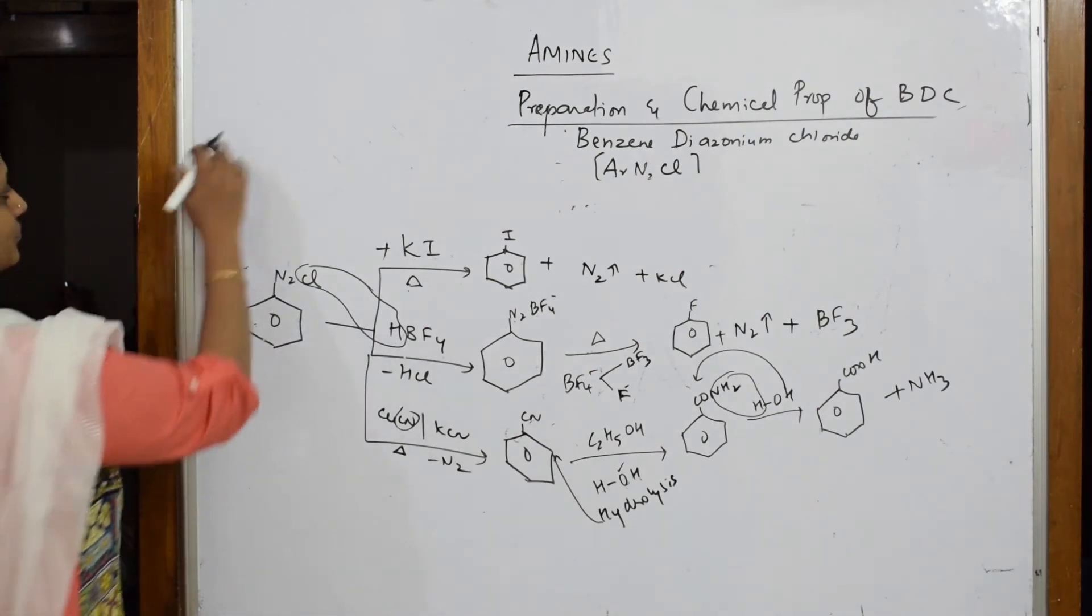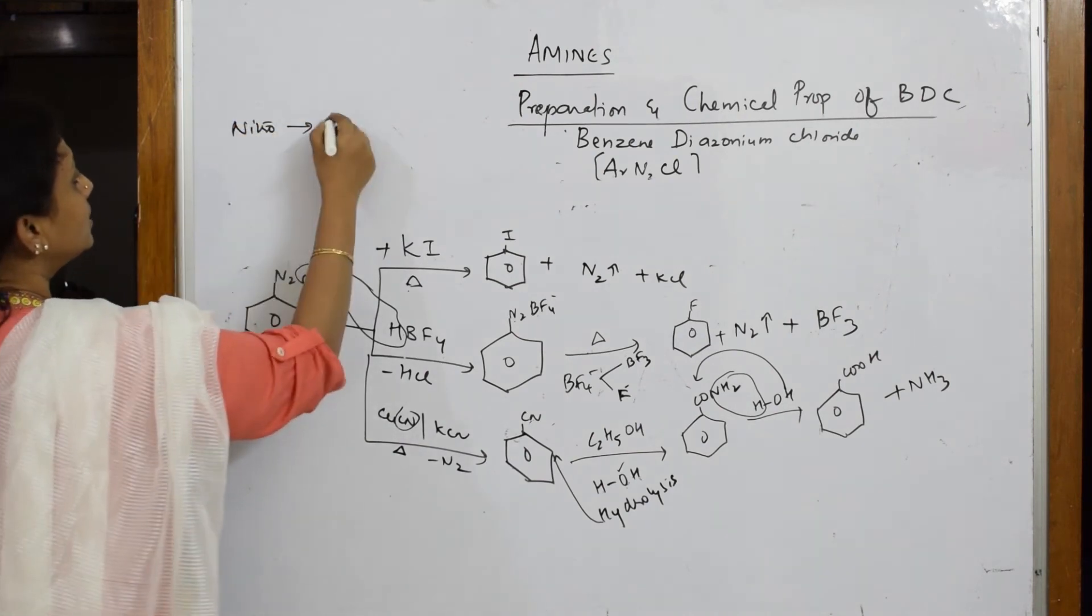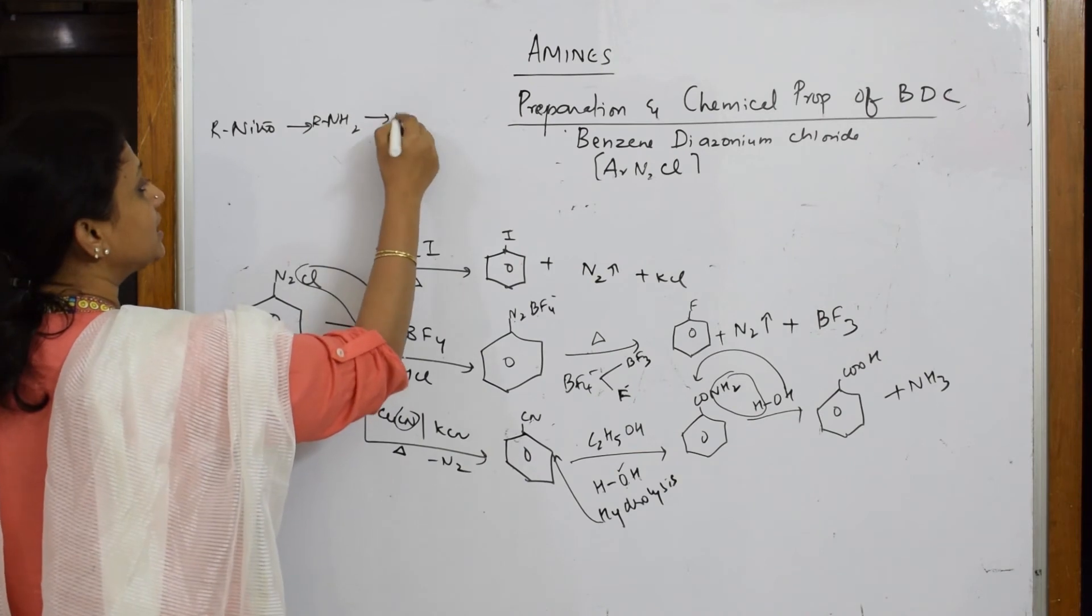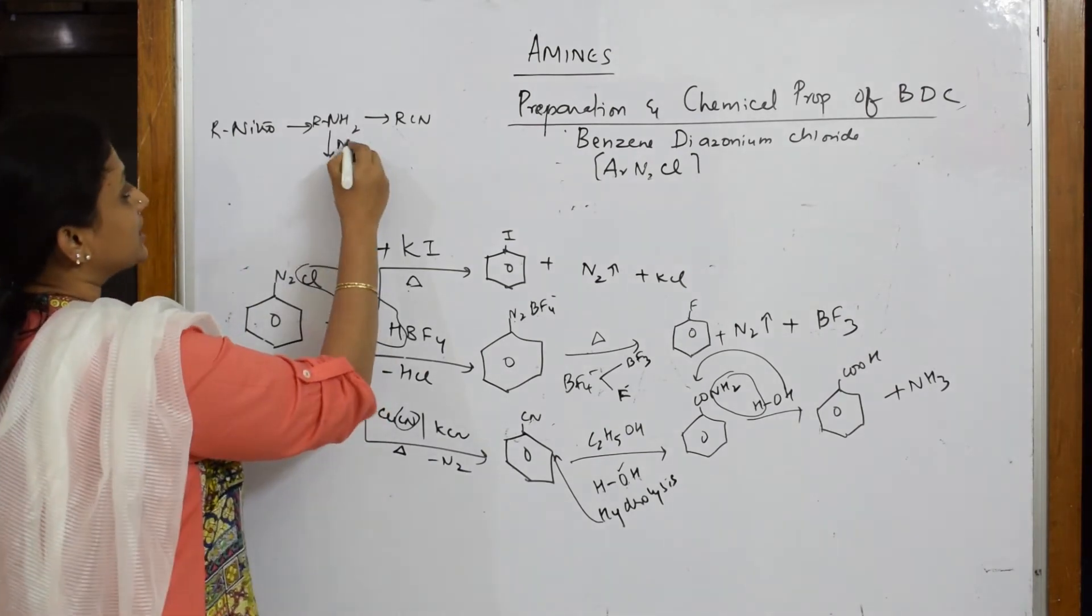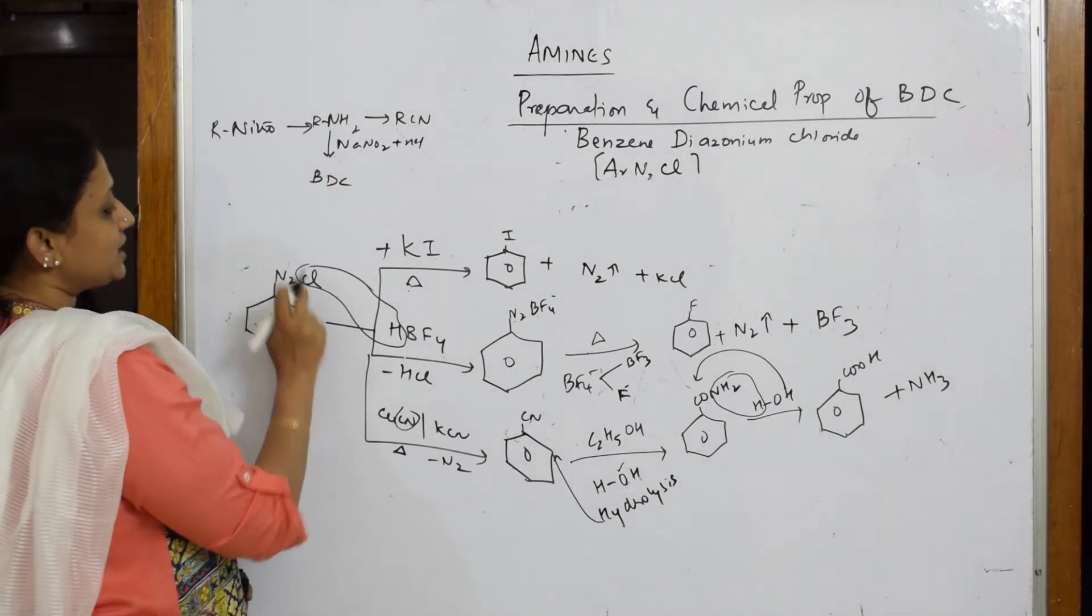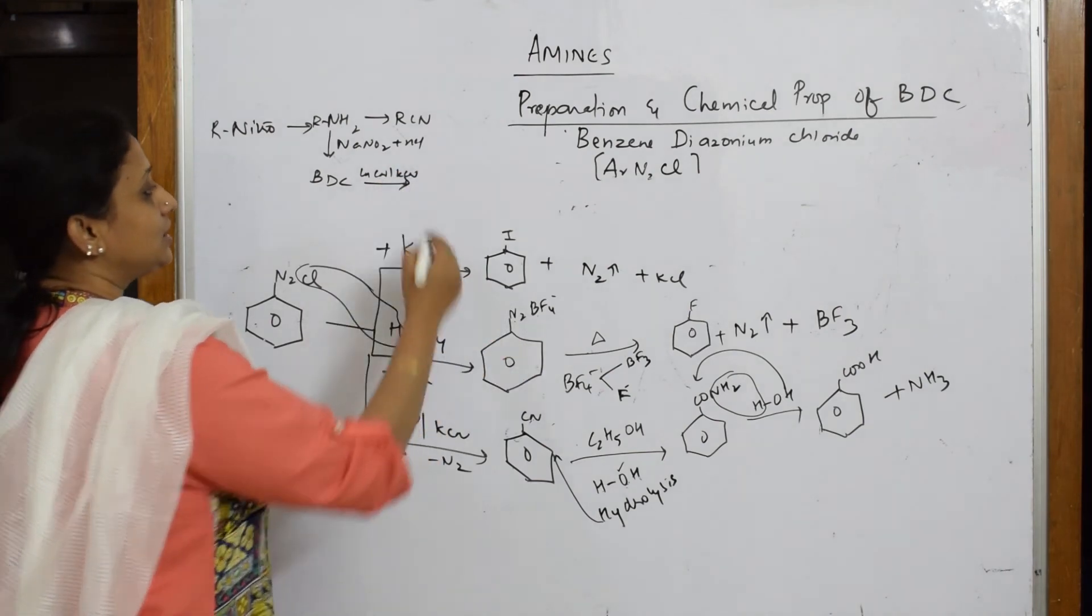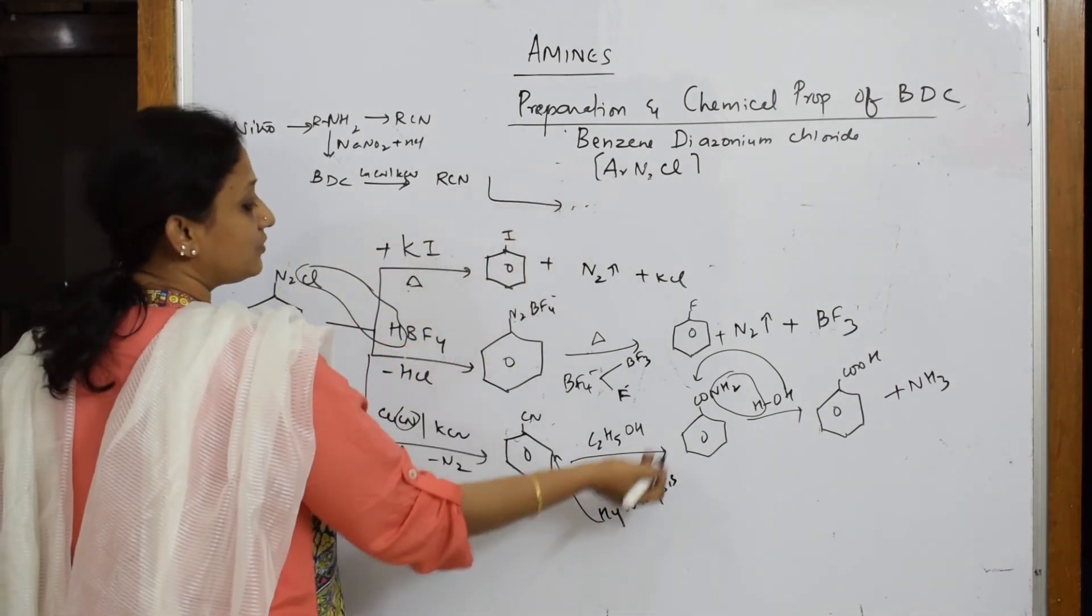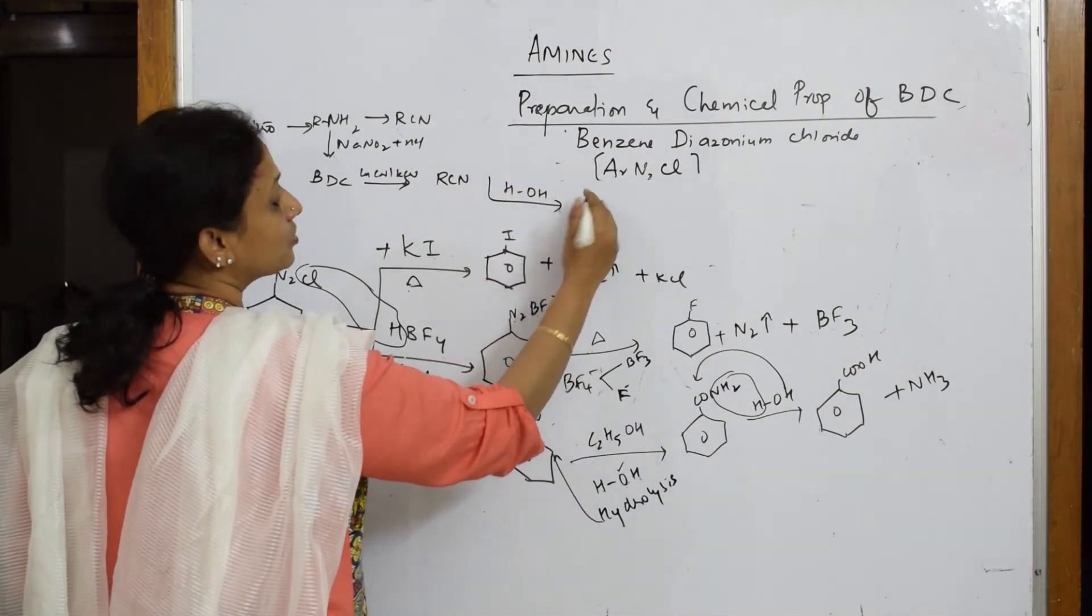What is the procedure? Earlier I said nitro is converted to amino. After that, the series of steps you are getting RCN. This is what I said. Now same amino if I treated it with NaNO2 and HCl which I said already, you are going to get BDC. Simple. Now this BDC, if you treat with CuCN and KCN what do you get? You get RCN. Here also RCN, here also RCN. This cyano group further when you are treating with ethanol or hydrolysis, you will finally get a compound called acid.